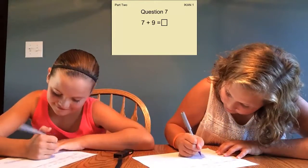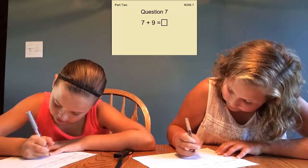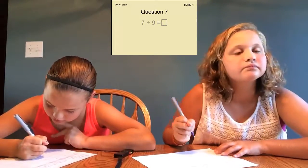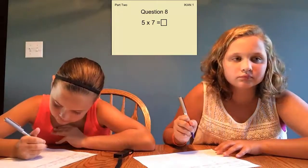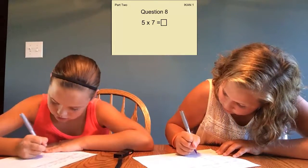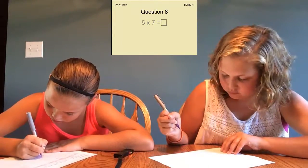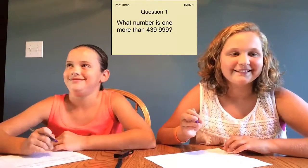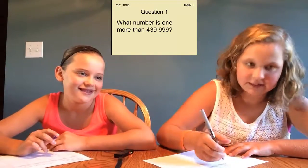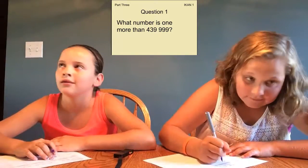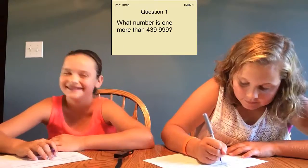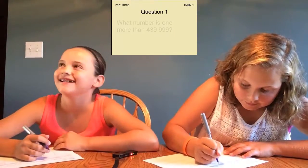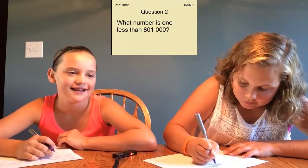7 plus 9. 5 times 7. What number is 1 more than 439,999? What number is 1 less than 801,000?